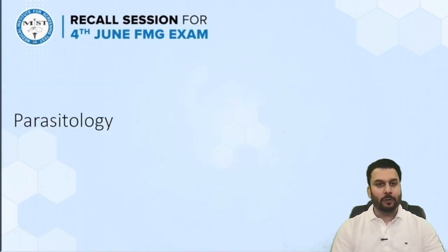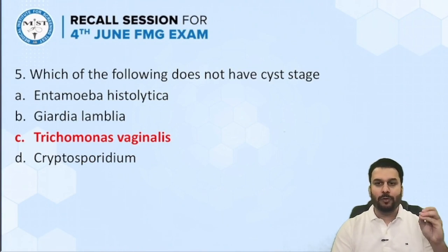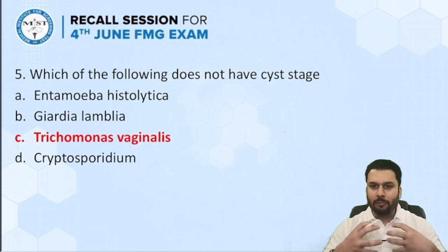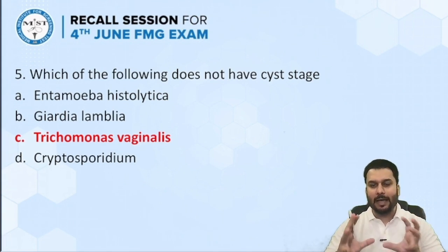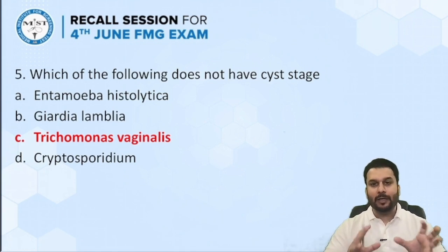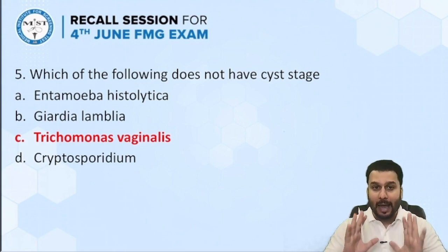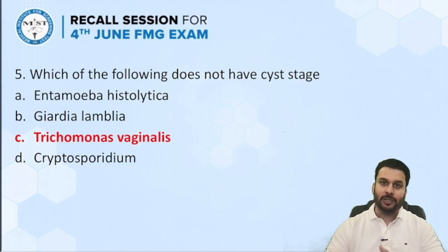Next topic: questions from parasitology. Which of the following does not have the cyst stage? This question was asked from the protozoa topic. Protozoa have cysts as the infective stage, but trichomonas does not have a cyst stage — the cyst stage is absent in trichomonas. The trophozoite stage is transmitted through the sexual route. So that is a straightforward question.